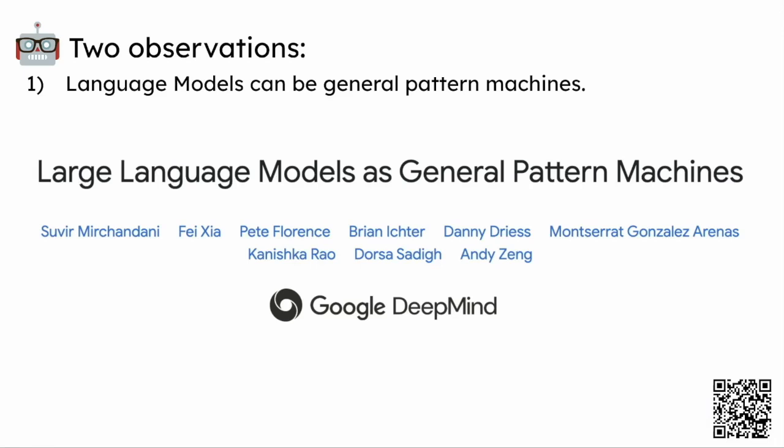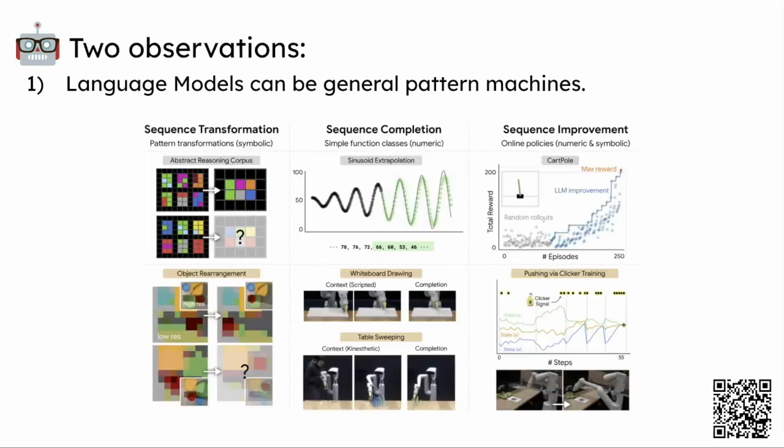This work started from two observations. The first is that large language models can be general pattern machines, as recently demonstrated by other papers. This means that once translated into text, language models can understand and replicate patterns that go beyond natural language.